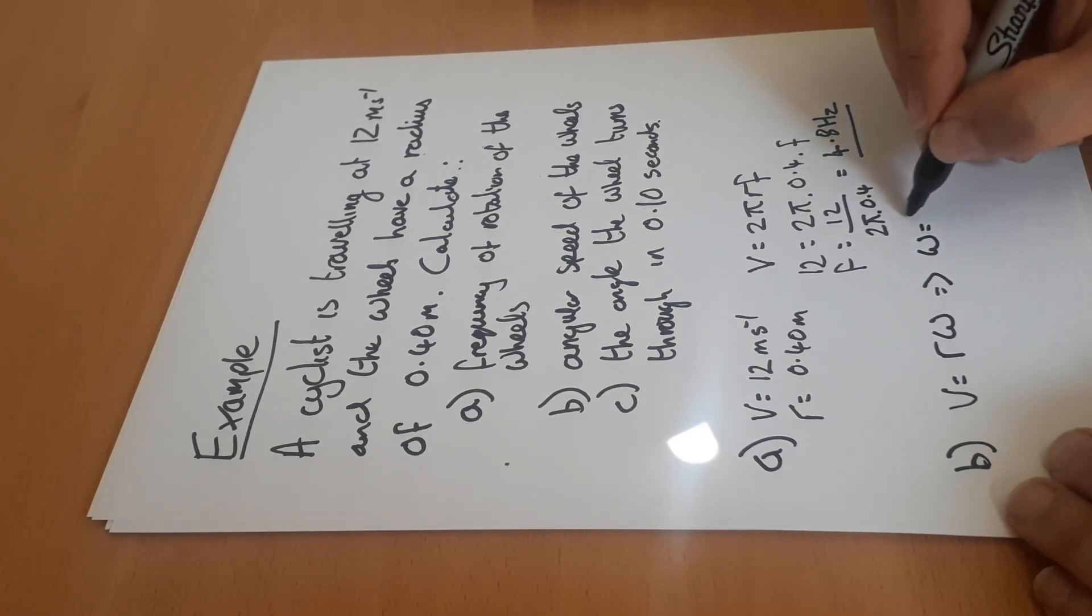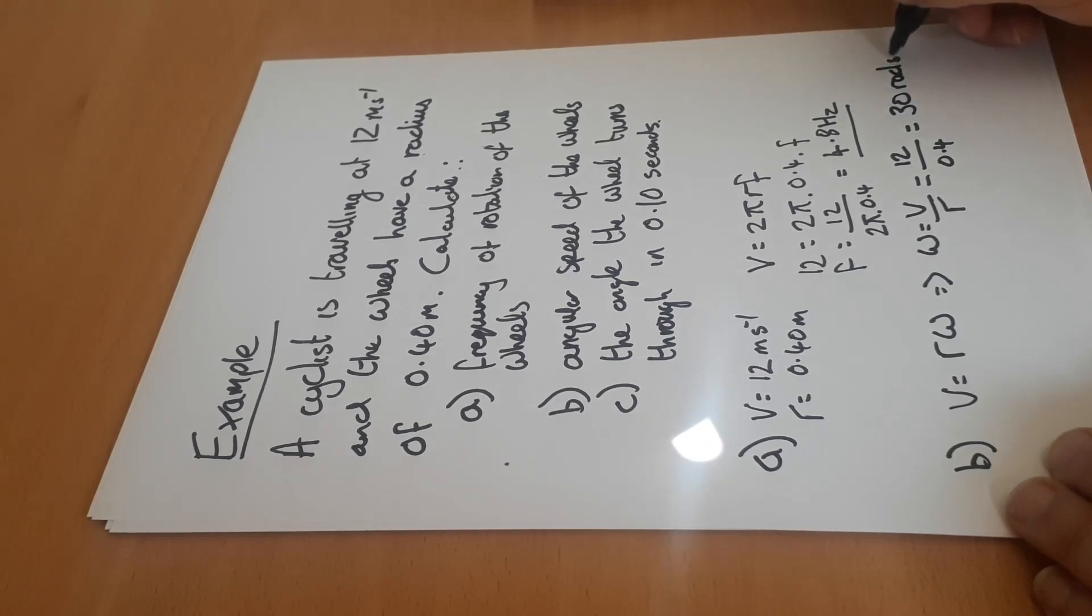So omega must equal v over r. Should have put the numbers in before I rearrange, but there you go. Therefore omega equals 12 over 0.4, which equals 30 radians per second.